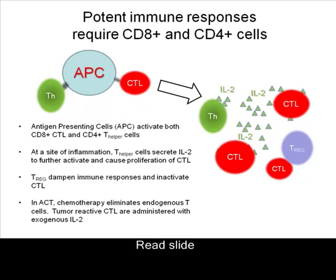Potent immune responses require CD8 positive and CD4 positive cells. Antigen presenting cells, or APCs, activate both CD8 positive CTL and CD4 positive T helper cells. At a site of inflammation, T helper cells secrete IL-2 to further activate and cause proliferation of CTL.